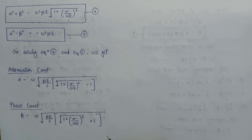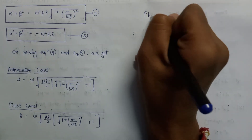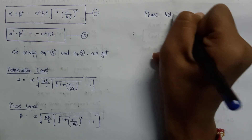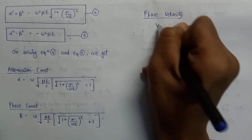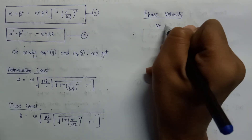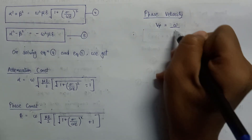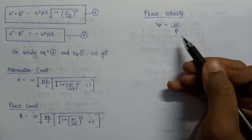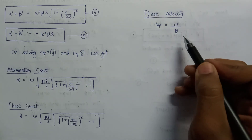Now, if we discuss about the phase velocity for the plane wave, the phase velocity V_p is given as omega over beta. So if we want to calculate the phase velocity, we will simply calculate it using this formula.